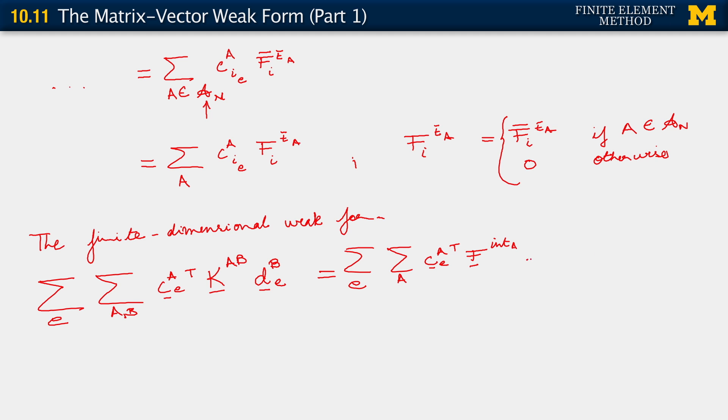And plus sum over spatial dimensions. Then the sum over elements. Then the sum over elements belonging to the Neumann boundary condition corresponding to that particular spatial dimension. And then we have yet another sum here over A. And this is over all the nodes. C_A, I, E, F, t bar, A, I.